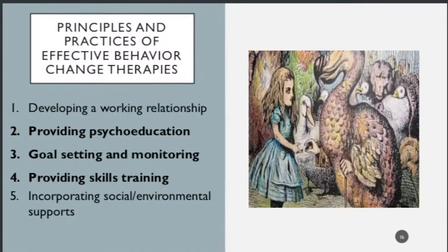The five processes are: developing a working relationship; providing psychoeducation — another way of saying delivering information; goal setting and goal monitoring; providing skills training, also called behavioral or coping skills training, which is the applied experiential component of behavior change; and incorporating environmental and social support systems — taking advantage of natural strengths in the person, their environment, and the helping system.